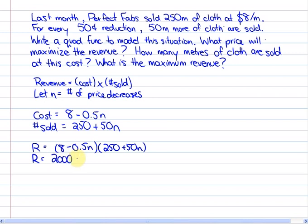I'm going to do this part pretty quickly. So, we have 2,000 plus 400n plus or minus 125n minus 25n squared. In standard form, it's negative 25n squared plus 275n plus 2,000.